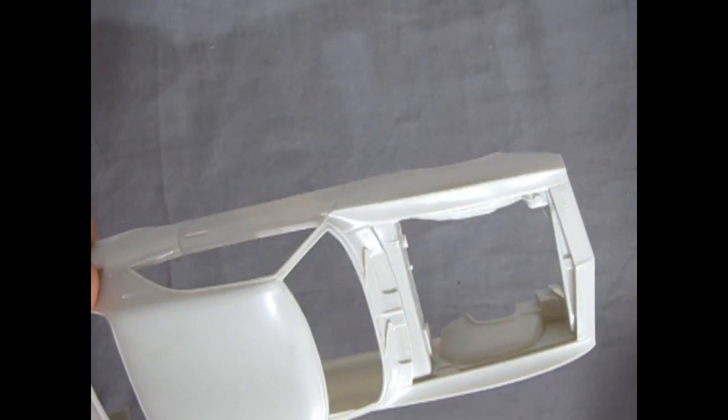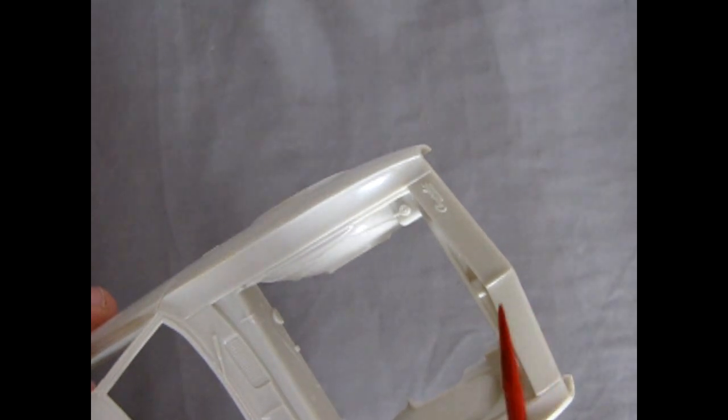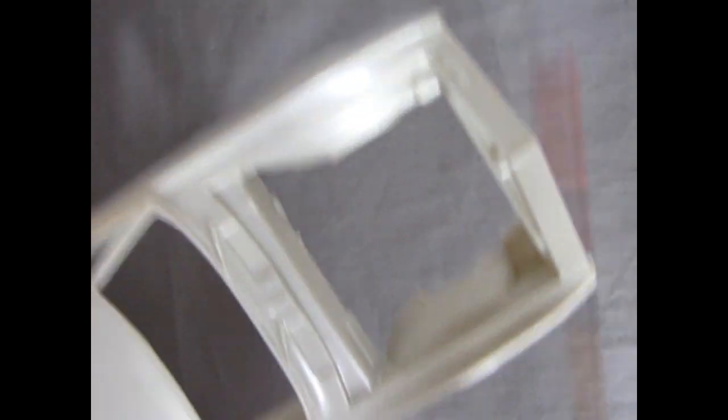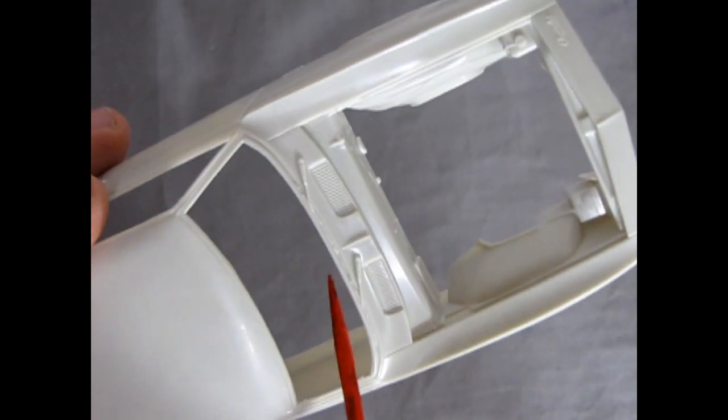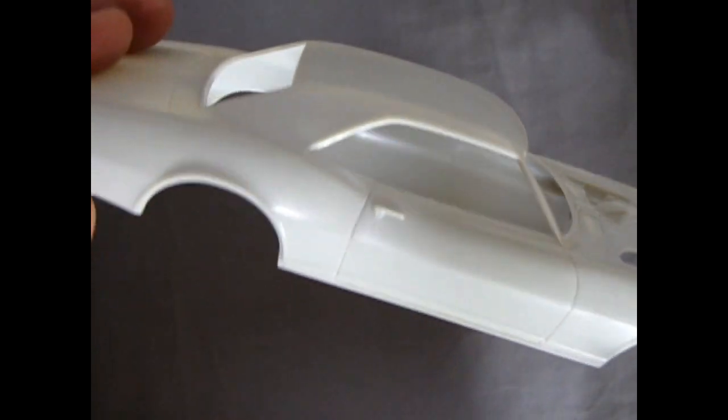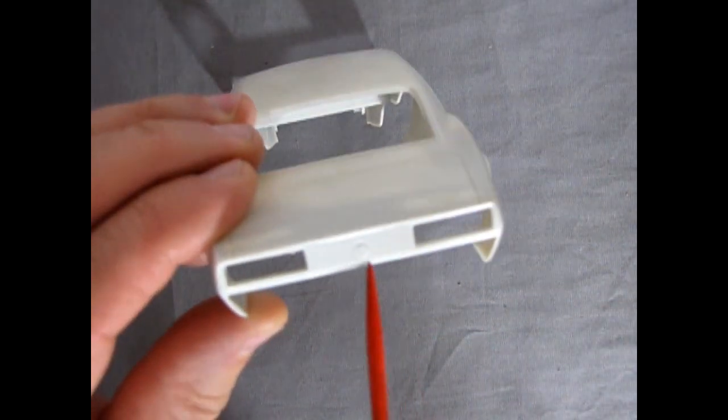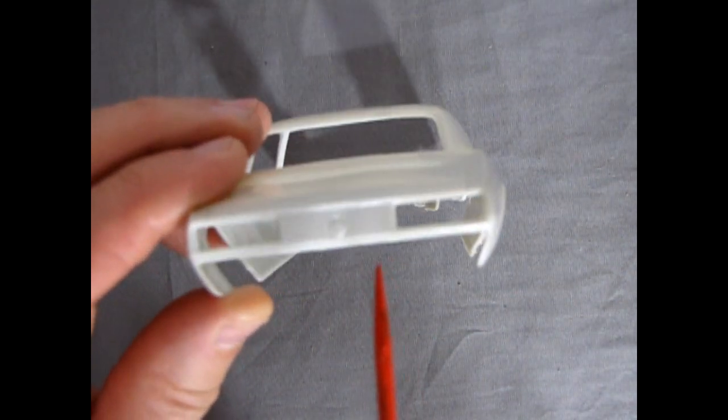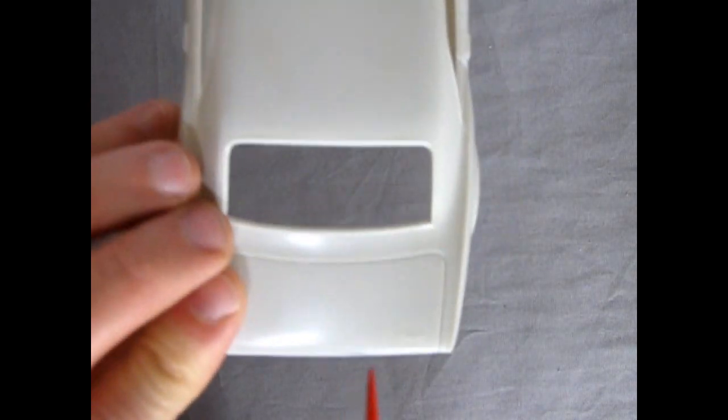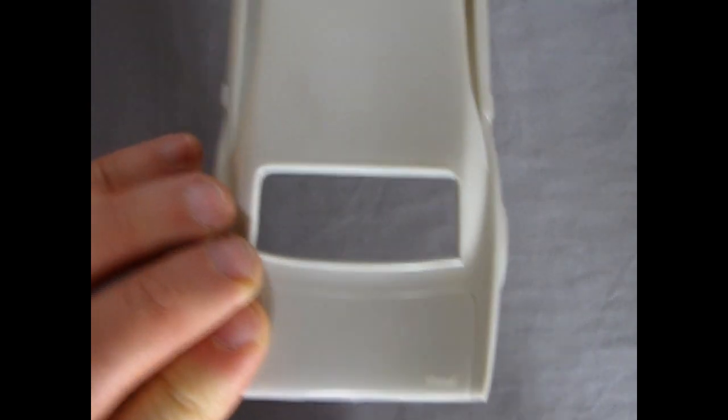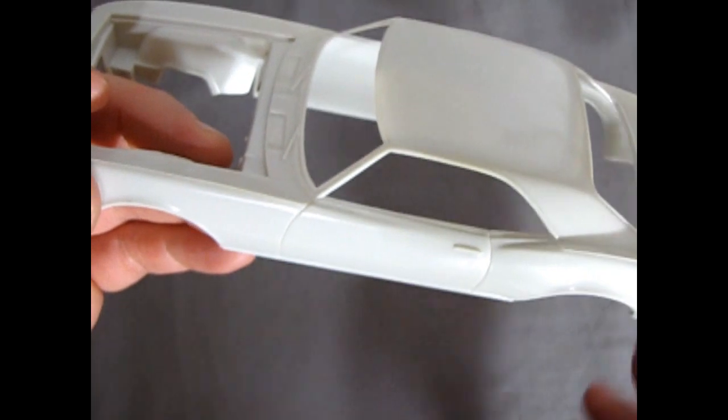You can see, of course, Camaro script right there on the hood. And we've got our vents in here with the windshield wipers. Nice, crisp detailing on this body. As well as there's our gas cap on the back, right there. And there's the Camaro script right here.